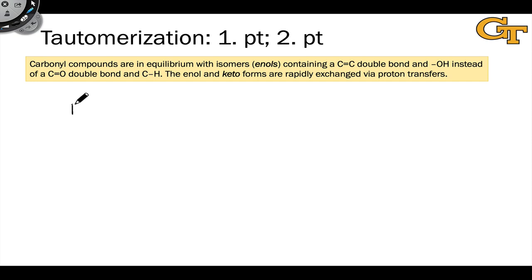Now that we've explored the acidity of the alpha position, we can notice something interesting about carbonyl compounds. We've seen that the carbonyl group is a CO double bond, and that the alpha position is mildly acidic.